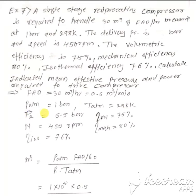Delivery pressure P2 is 6.5 bar. Volumetric efficiency is 75%, speed 450 rpm, mechanical efficiency 80%, and isothermal efficiency 76%. Since atmospheric pressure and atmospheric temperature are given but suction pressure and suction temperature are not given, we consider atmospheric condition equal to suction condition.